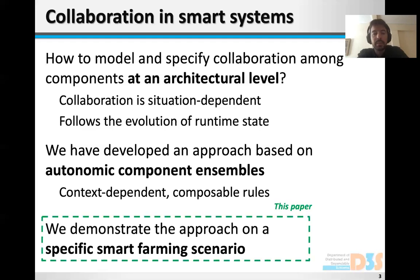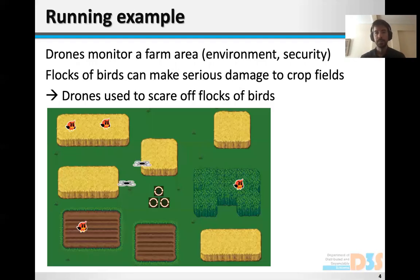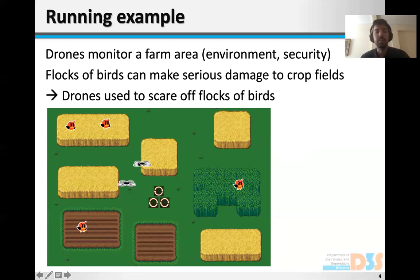In this paper we would like to demonstrate our approach on a specific smart farming scenario. We have a number of drones — seen here two of them in the picture — in a large farm area that might have a number of crop fields. These are the yellow rectangles here in the picture.